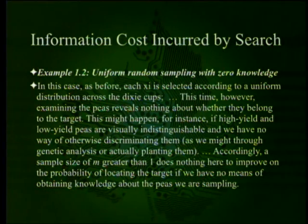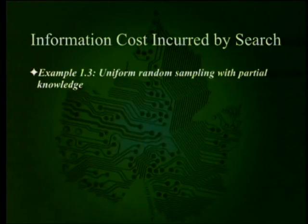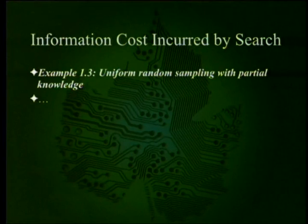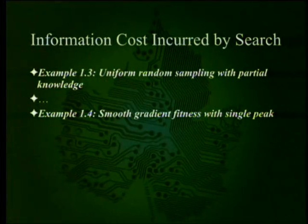Your only options are to either collect all peas, or if required to use only one pea, you might as well just lift one at random. Example 1.3 covers uniform random sampling with partial knowledge — for example, you can tell whether a pea is yellow or green, but you don't know for sure whether the yellow or green ones are better at growing.